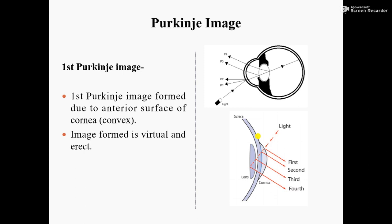The First Purkinje Image is formed due to the anterior surface of the cornea. This is the cornea and this is the anterior surface. The anterior surface of the cornea is convex — because the shape of the cornea is convex. Because of this convex shape, the image formed is virtual and erect.